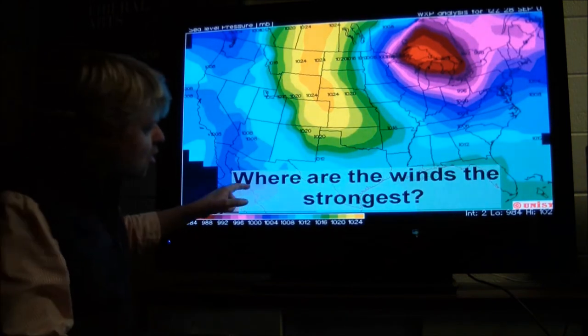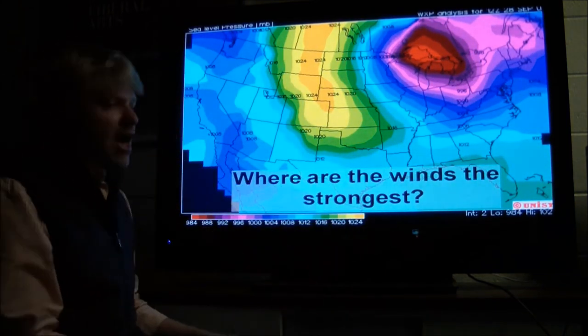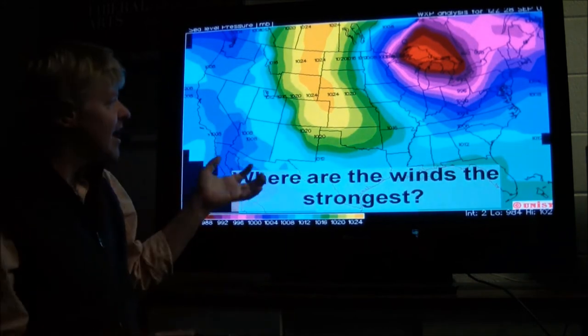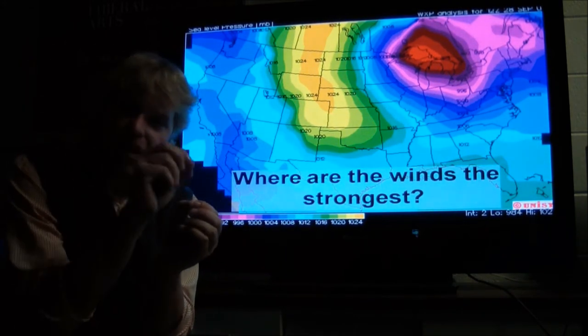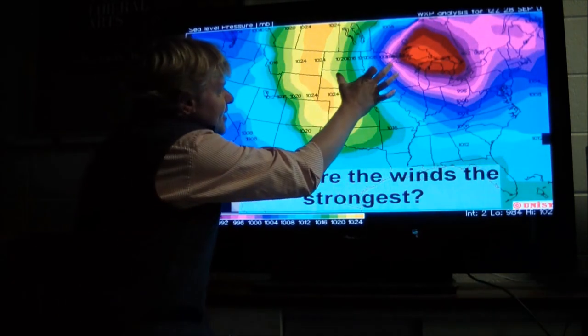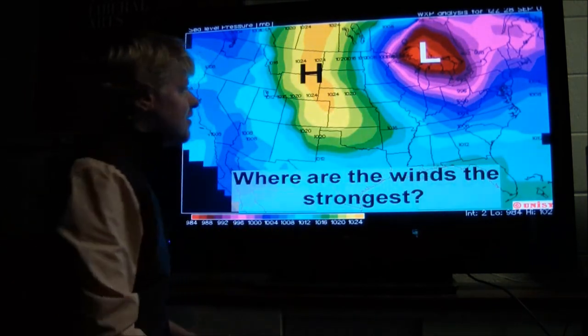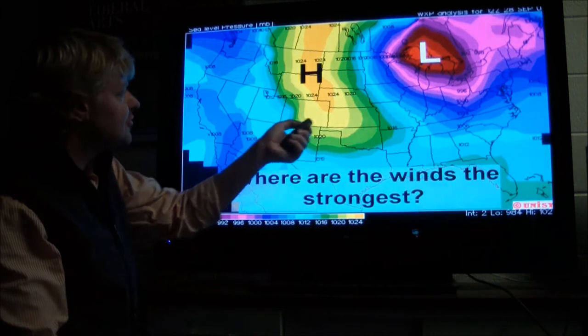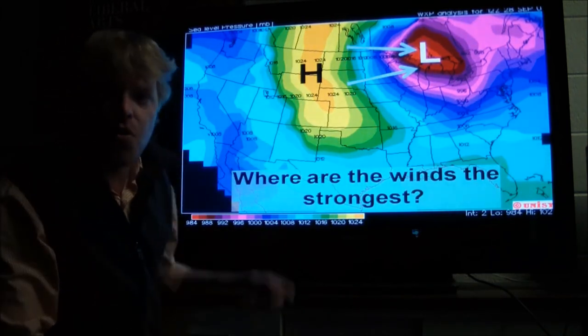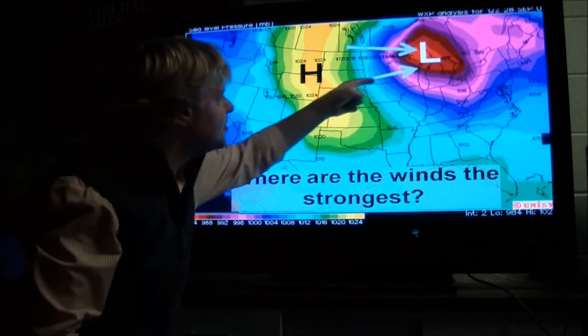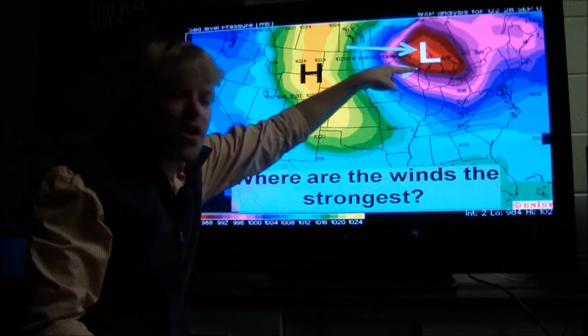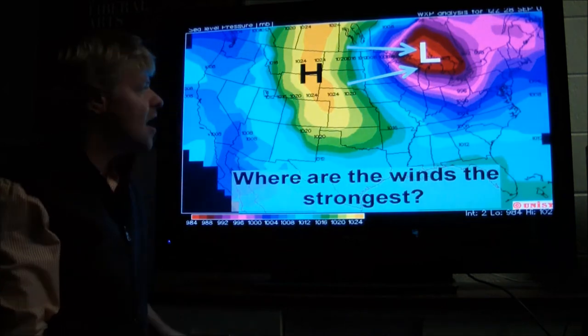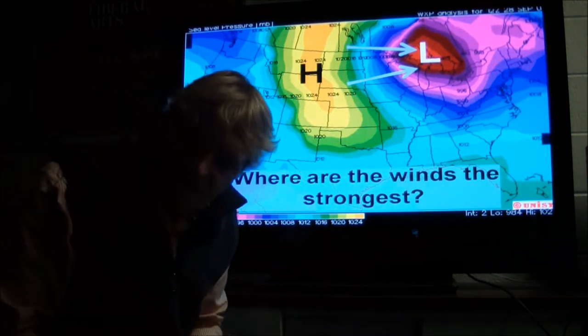So in this example here, where are the winds the strongest? And if we don't know much about what we're looking at, just essentially think where do we see the greatest difference between colors. And that greatest difference between colors is right in this area right through here. And so here, the high pressure center. There, the low pressure center. We know high to low. We know the general direction of the wind in this area is going to be going in that direction. But it's also going to be quite fast because of those isobar lines being very close together.